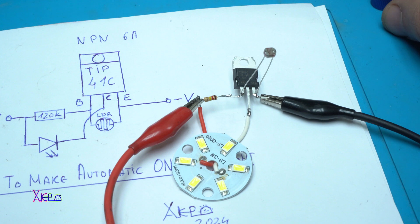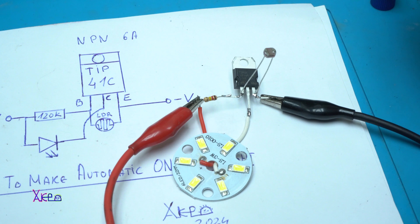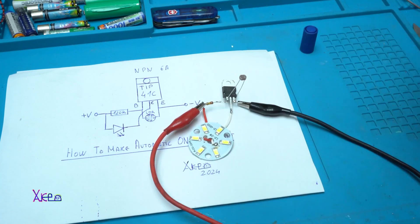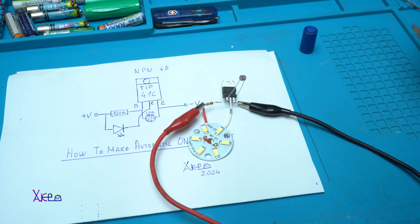I hope you liked today's video, simple project using three components to make automatic on-off light. Please give a like, share the video, and subscribe to my channel.